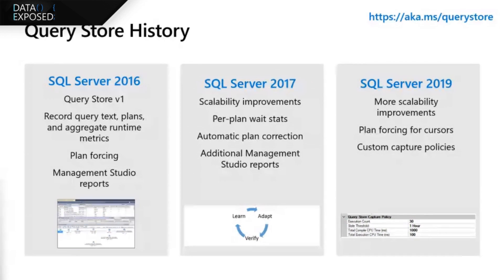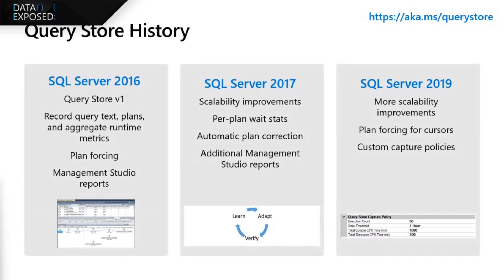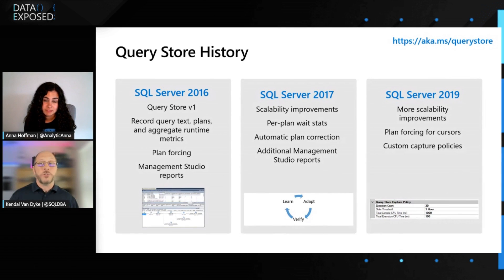Then in SQL 2019, more scalability improvements based off of customer feedback. We added plan forcing for cursors. And we also added custom capture policies — we realized that the default capture policies didn't quite work for every single customer. Some customers had higher workloads or higher resource usage from Query Store. So we gave you the ability to tune those knobs in order to figure out which queries would actually be captured inside Query Store and which ones would not. For all of these previous versions, on SQL Server on-premises, Query Store was turned off by default. In Azure, it's on by default.